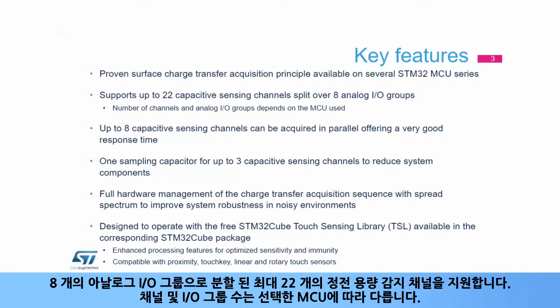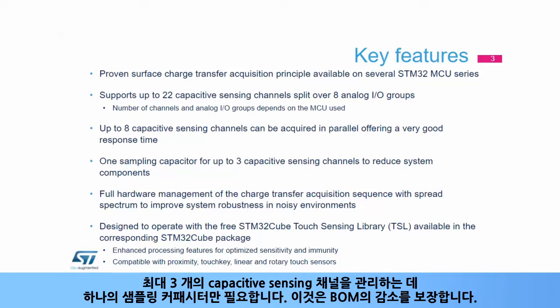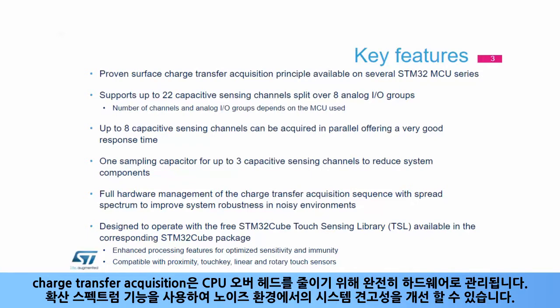The TSC supports up to 22 capacitive sensing channels split over 8 analog IO groups. The number of channels and IO groups depends on the selected MCU. For optimum performance, up to 8 capacitive sensing channels can be acquired in parallel, offering a very good response time. Only one sampling capacitor is needed to manage up to 3 capacitive sensing channels, ensuring a reduced bill of materials. The charge transfer acquisition is fully managed by hardware to reduce CPU overhead.